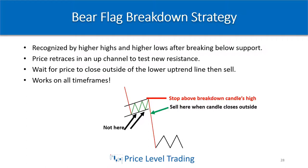The bear flag breakdown is recognized by price making higher highs and higher lows after breaking below support. You can also see it after a test of support following a significant move lower on strong volume, indicating a continuation move to the downside. In this case, price retraces in an up channel to test the new resistance. Wait for price to close outside of the lower uptrend line, then sell. This works on all time frames because the market is fractal.